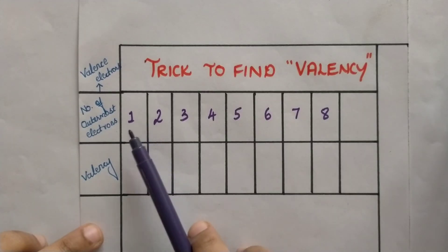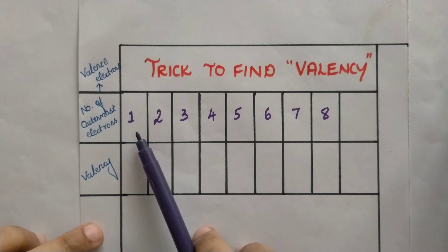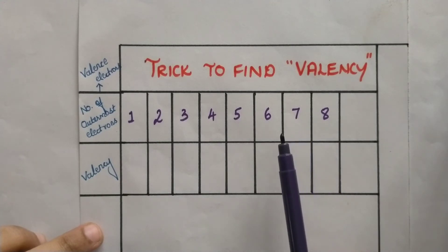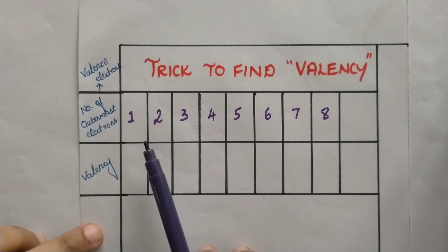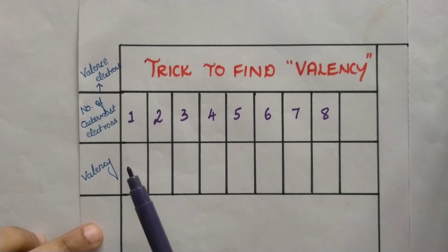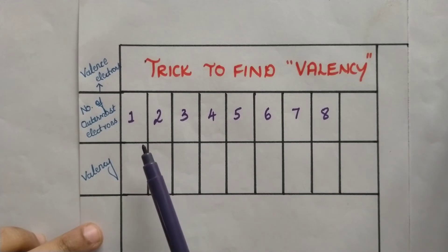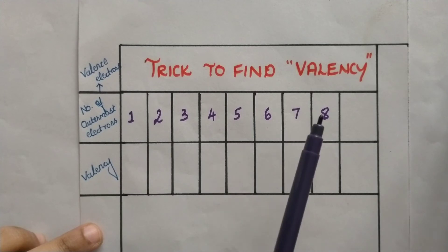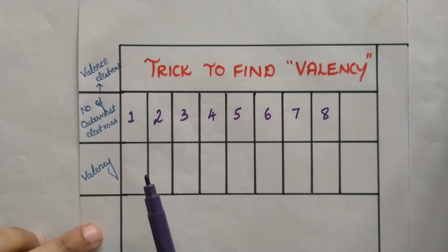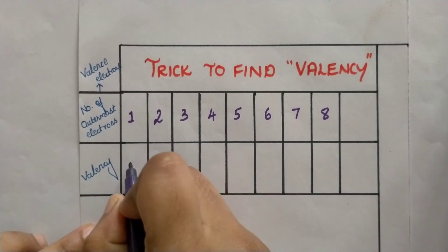Let's start with 1. This particular element has one electron in its outermost orbit, so it requires 7 more electrons to acquire the octet configuration. It can either gain 7 electrons or donate its one outermost electron to achieve a stable configuration. Donating 1 electron is much easier than gaining 7, so the valency of this element is 1.